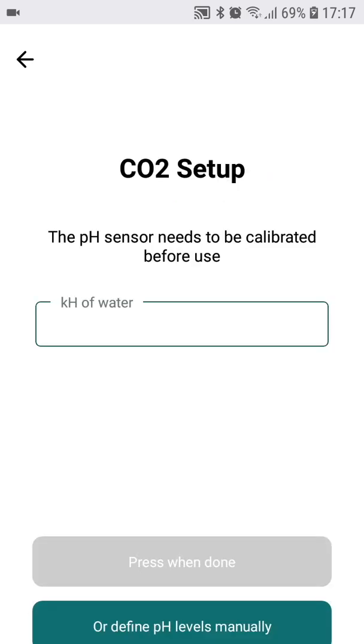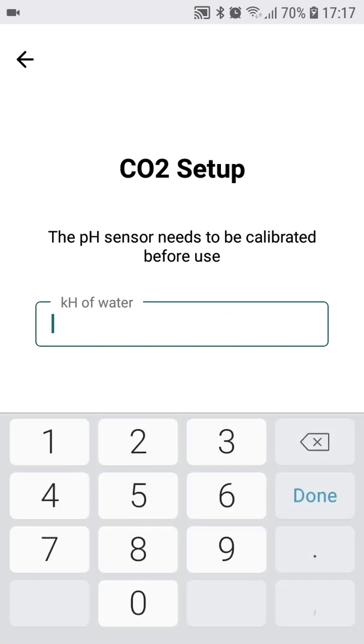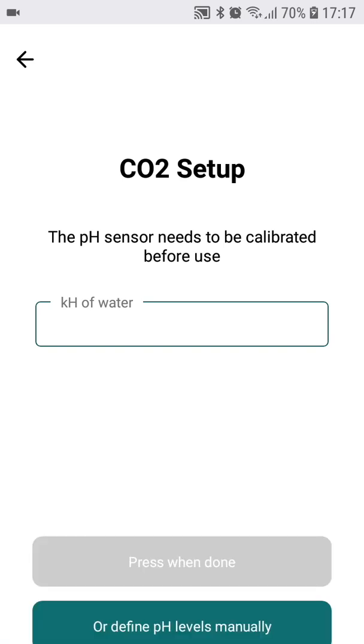After we have successfully calibrated the probe we need to set the required levels of pH to be maintained. There are two options how to do this. We can either set the KH of water in our aquarium and let the device set the pH levels based on the formula which defines the ratio between carbon water hardness measured in KH, the acidity of water measured in pH, and the dissolved CO2 in water. If you prefer to let the device automate this decision, enter the KH level on this screen. You will be able to modify the settings any time later.